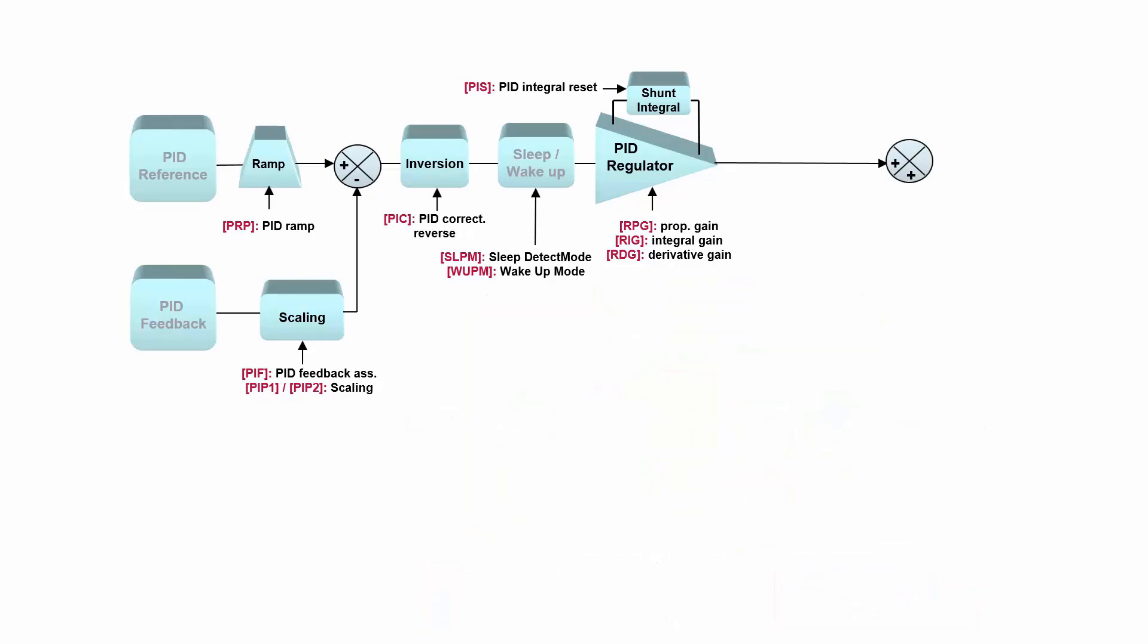Then the output of the PID regulator enters an additional summing point, and we will see why. But before entering the summing point, we can set certain limits of our PID output and then additionally ramp up the PID output.